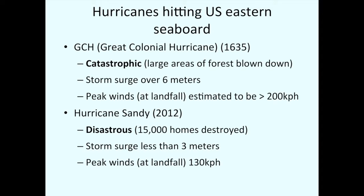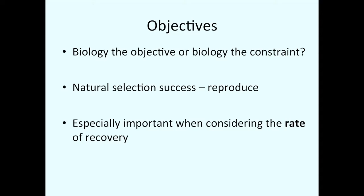When we're talking about recovery from a disturbance, there are social and ecological components. Whenever we're looking at objectives of silviculture, you always have to separate: is biology your objective, or is biology the constraint in terms of where you're trying to go? In natural selection, success is that your gene alleles make it into the future — that is the only measure of biological success. It doesn't matter how big you are as a tree, how large in diameter. If the gene alleles of that tree make it into the future, it's a success.